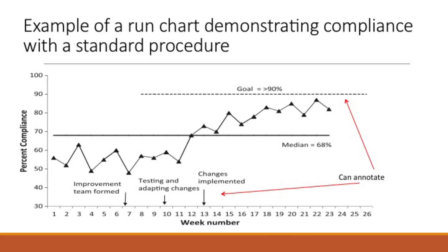Here's an example of a run chart that demonstrates compliance with a standard procedure. On the x-axis we have percent compliance, and on the y-axis we have the weeks numbered sequentially. Every week the improvement team plotted a data point showing the percent compliance. We see seven points plotted initially, and then they formed an improvement team and started testing and adapting changes in week 10. They implemented changes and we start to see their percent compliance increase, eventually approaching their goal.